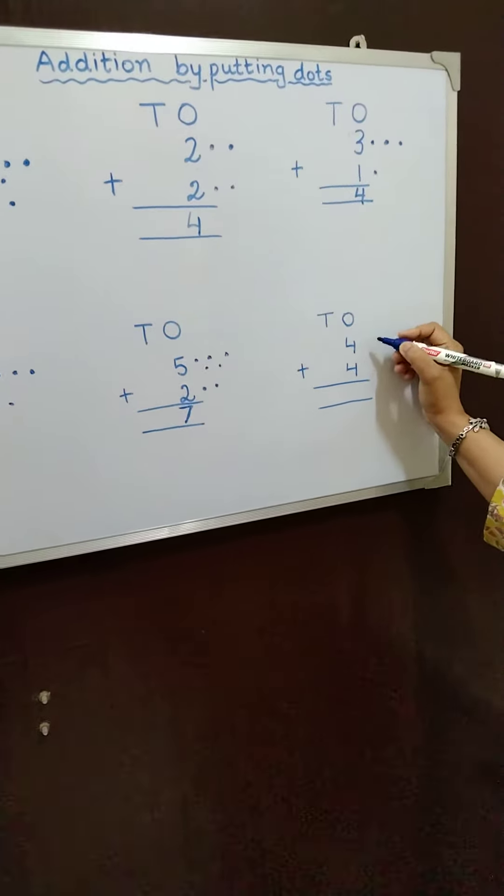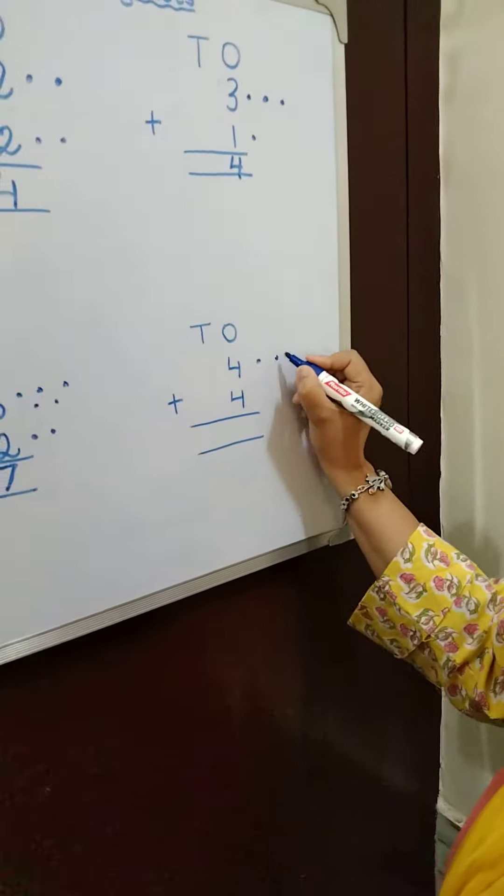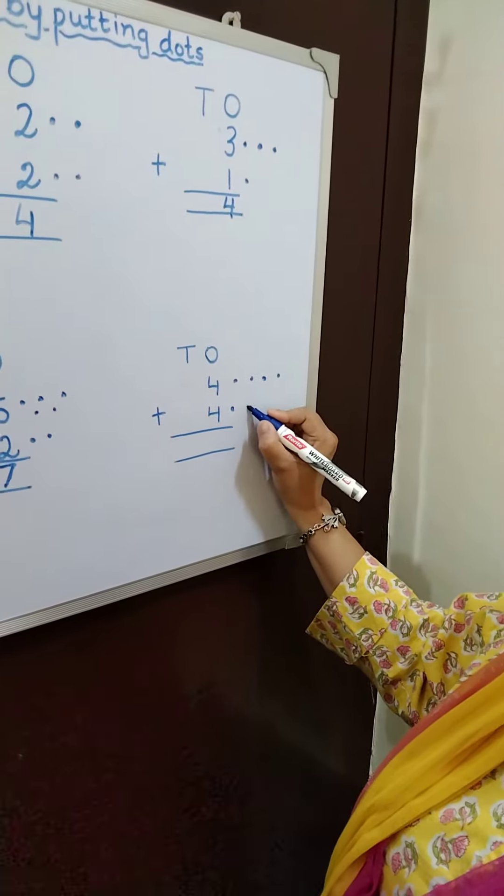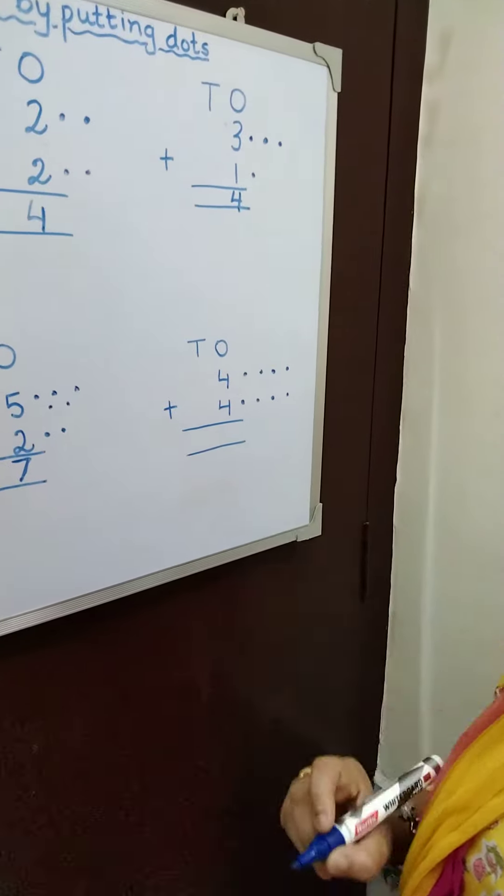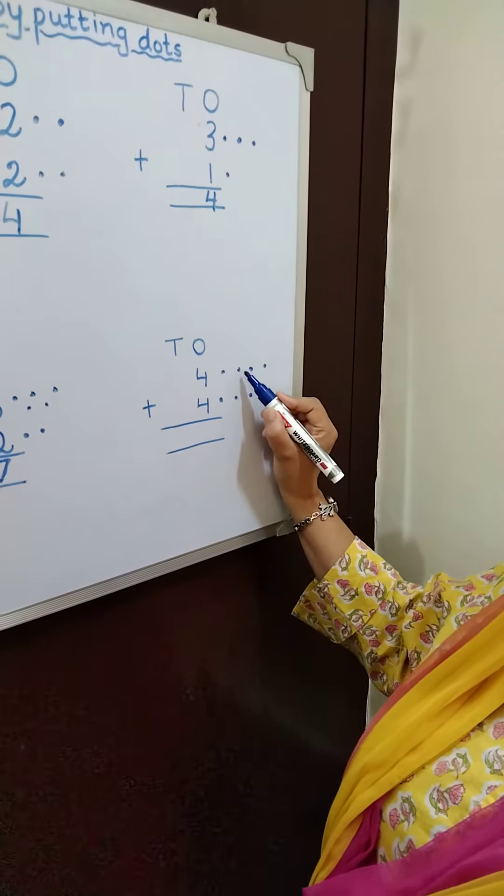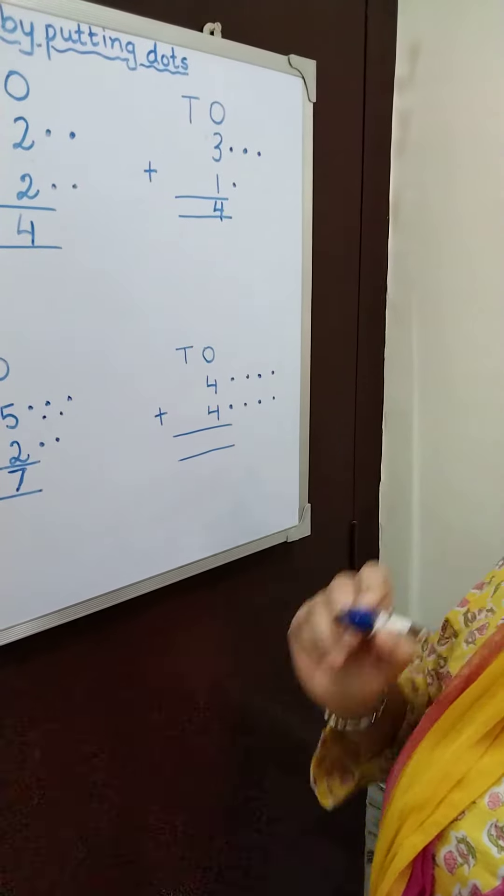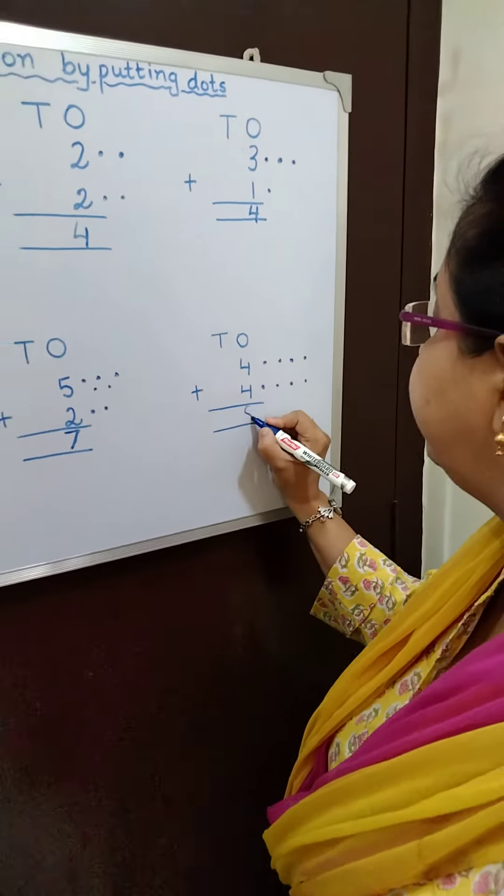So this is 4. 1, 2, 3, 4. This is also 4. So 1, 2, 3, 4. Now let us count. 1, 2, 3, 4, 5, 6, 7, 8. And I will write here 8.